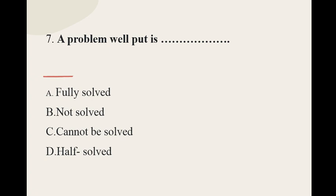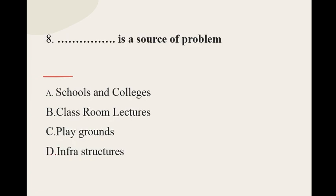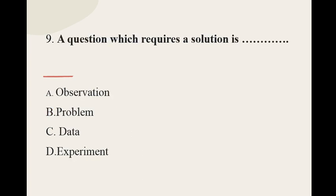The options for question seven are: fully solved, not solved, cannot be solved, half solved. The correct option for question number seven is half solved. Question number eight: Dash is a source of problem — the options are: schools and colleges, classroom lectures, playgrounds, infrastructure. The correct option is classroom lectures.